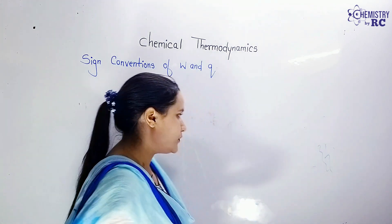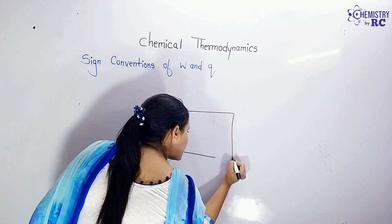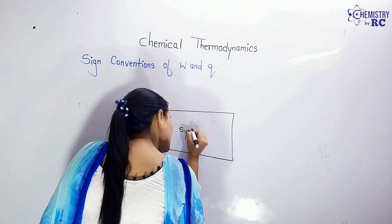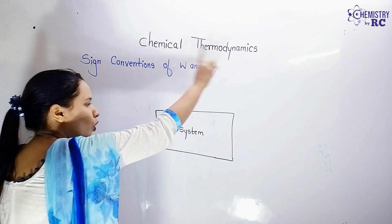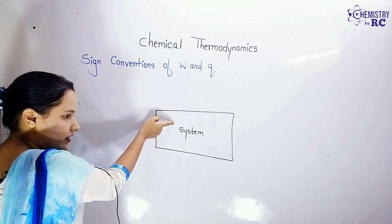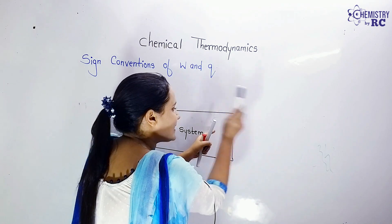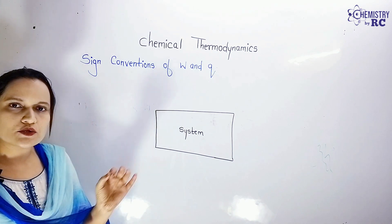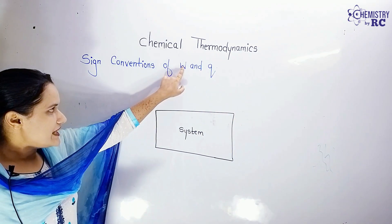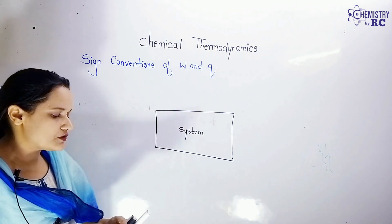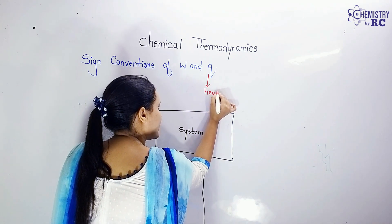We are going to draw a rectangle box here, and this rectangle box will act as a system. Whatever is outside this box will act as the surrounding. If anything is coming from outside into the system, it is coming from surrounding to the system. If anything is going from the system to the outside, it is going from the system to the surrounding. We have to see the sign convention for work and also for heat, which in thermodynamics is represented as Q.